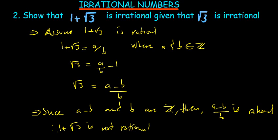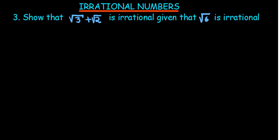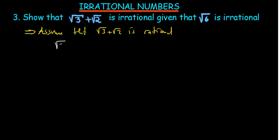Show that root 3 plus root 2 is irrational, given that root 6 is irrational. When you add two irrational numbers, let's see what we find. We assume that root 3 plus root 2 is rational, so root 3 plus root 2 equals A over B, where A and B are integers or co-primes. Now I'm going to square both sides.